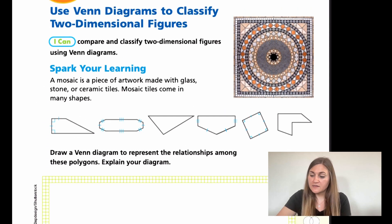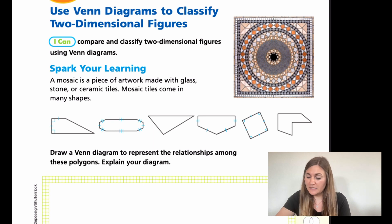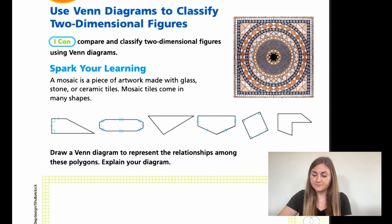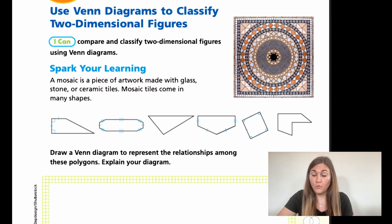We have a spark your learning that says a mosaic is a piece of artwork made with glass, stone, or ceramic tiles. Mosaic tiles come in many shapes. They give us multiple shapes, and the task is to draw a Venn diagram to represent the relationship among these polygons and explain your diagram. So first I'm just going to write on top of the shapes what I'm seeing, and I'm just going to focus on their sides right now.